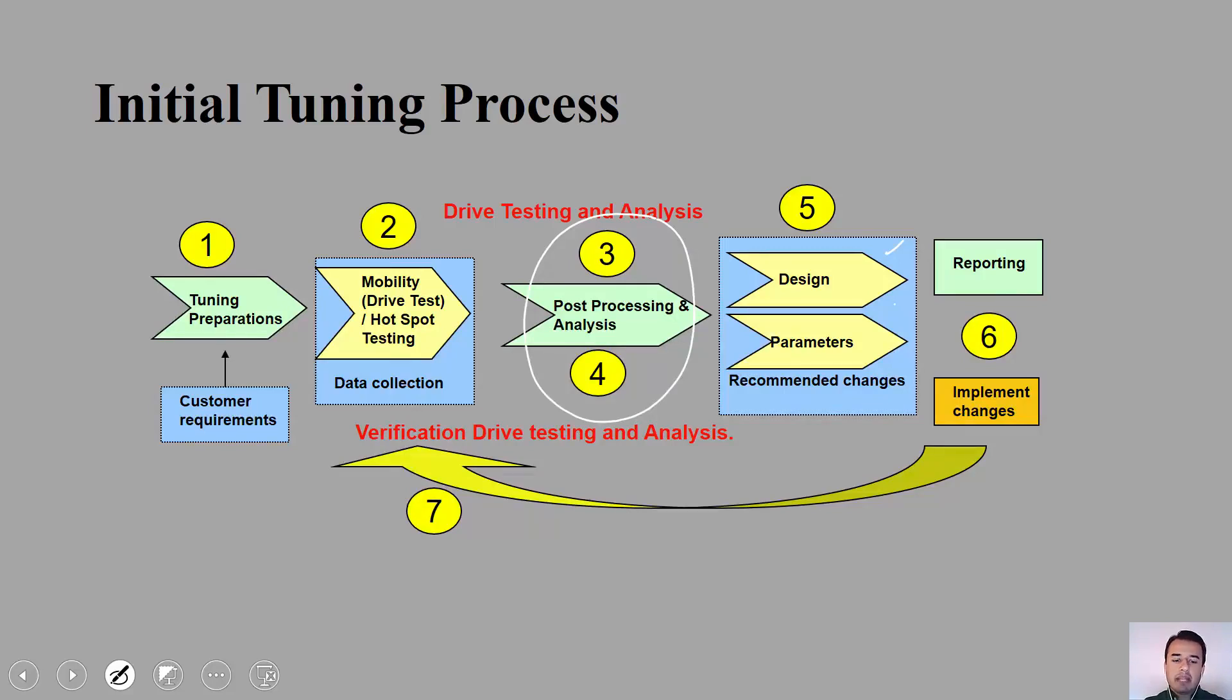Once those specific changes have been done, a report will be given: this is what we found out and these are the changes that have been made. Then those changes will be implemented again into the network, and once again drive testing will be done to make sure that after making those parameter changes, after doing tilt optimization or azimuth optimization or tuning the handover boundary parameters, is the network or system performing accordingly as we expected it to be? This procedure goes in a cycle. Step number seven is you verify the drive testing analysis after making those changes, so it goes into the loop.